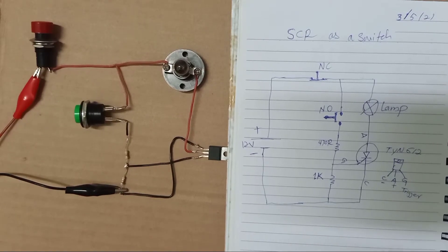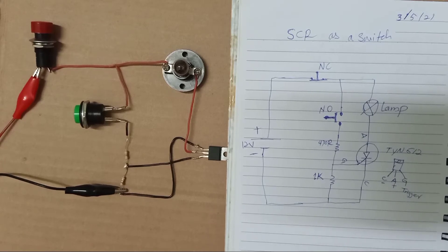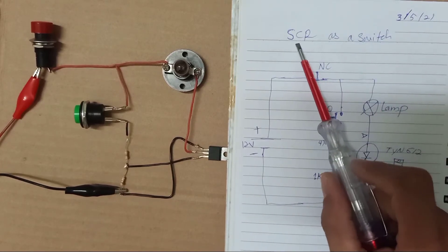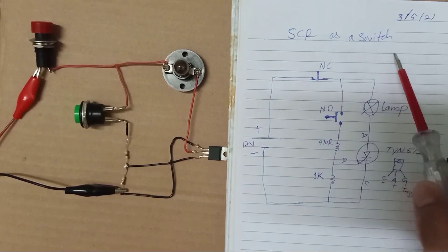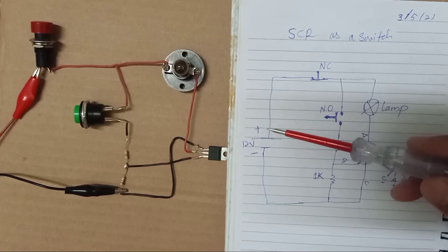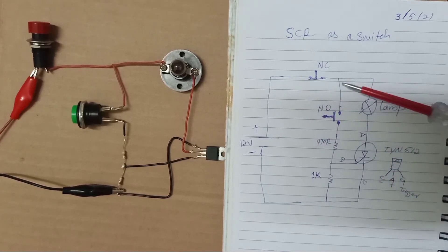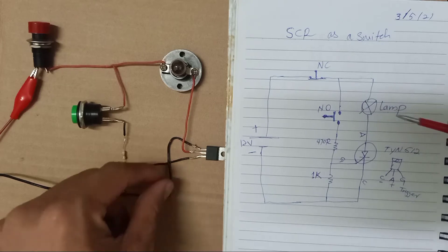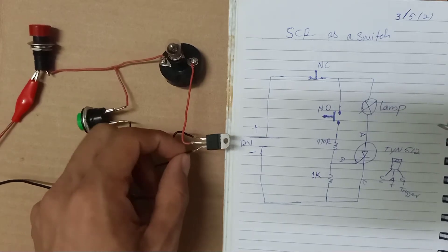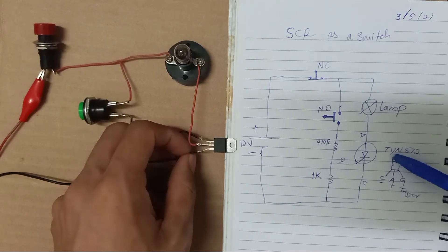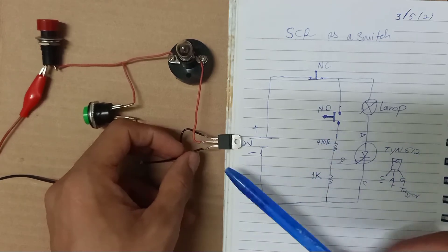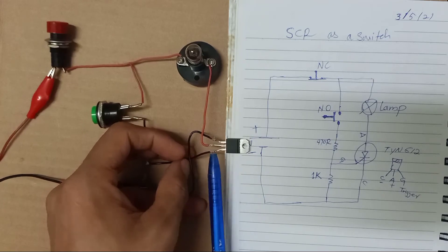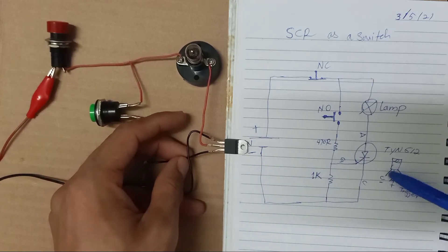Today we are going to use an SCR as a switch. This is a very simple circuit to experience the SCR thyristor, which is the main component. The SCR number is TYN612. The input and output are on this component.